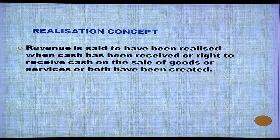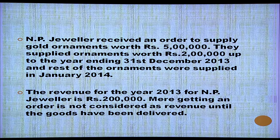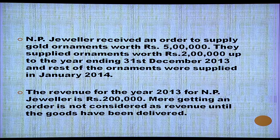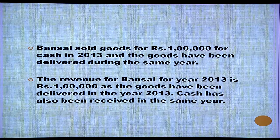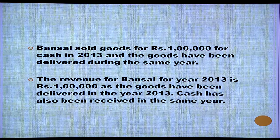Here is an example. NP Jeweler received an order to supply gold ornaments worth rupees 5 lakh. They supplied ornaments worth rupees 2 lakh up to year ending 31st December 2013, and the rest were supplied in January 2014. The revenue for NP Jeweler for the year 2013 is rupees 2 lakh — merely getting an order is not considered as revenue until goods have been delivered. Benzel sold goods for rupees 1 lakh in cash in 2013 and the goods were delivered the same year. The revenue for Benzel for 2013 is rupees 1 lakh, as goods were delivered and cash received.